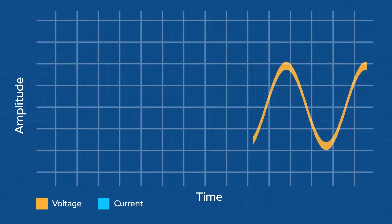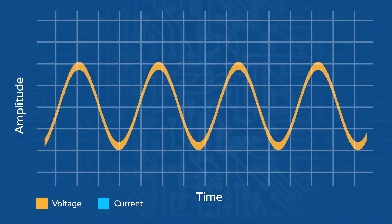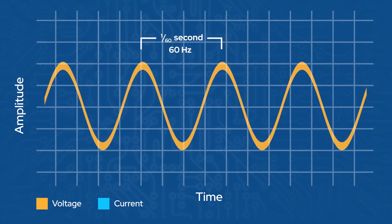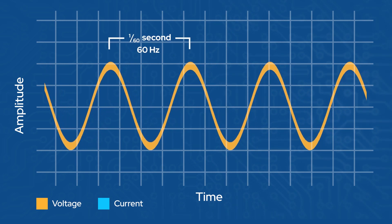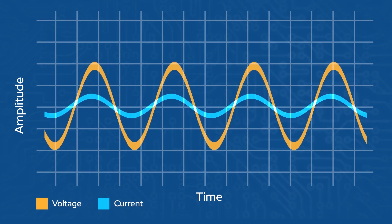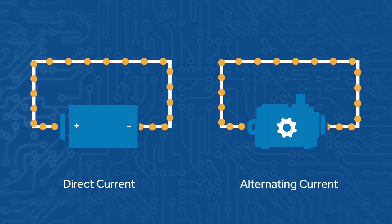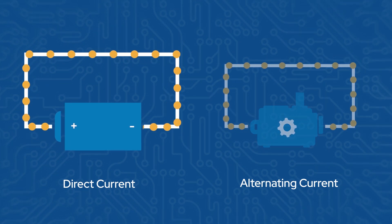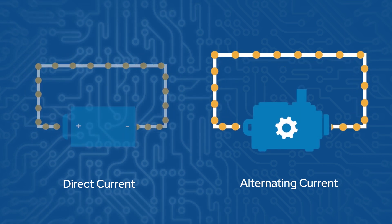Now let's talk about AC power. Remember that the A in AC stands for alternating — that's because the flow of current switches direction, or more specifically, alternates. This is the type of electricity that flows into your home. In the US, the voltage cycles between plus and minus 120 volts at 60 hertz, or every 1/60th of a second. And because current is proportional to voltage, the current also alternates between positive and negative. You can also see this by looking at how current flows: with DC, current flows from the positive side of the supply to the negative side; with AC, the current flows back and forth.